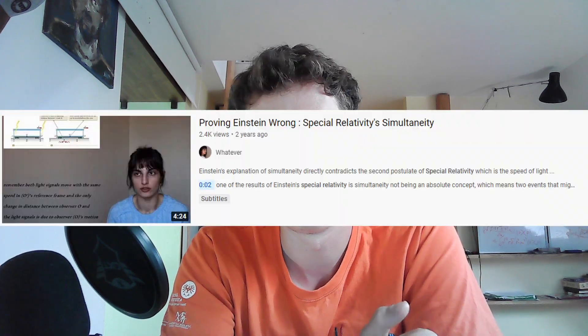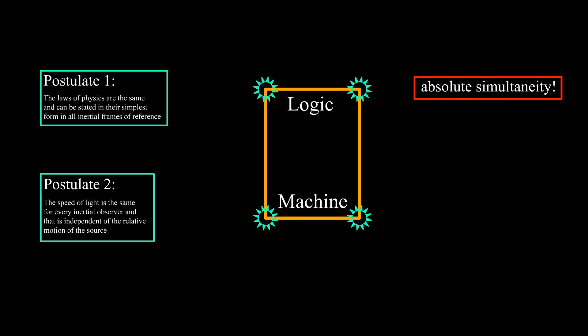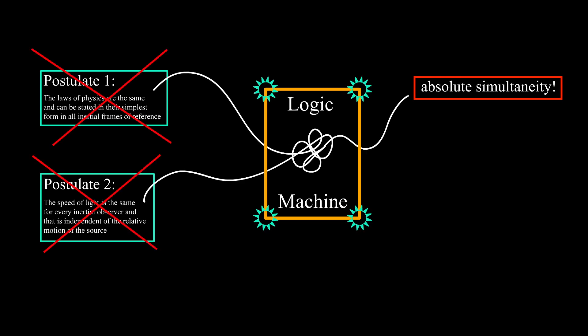For example, there is a video — linked in the description below — where absolute simultaneity was forced for both observers, producing a contradiction with the postulates, which is not a proper way to use logic. You might go watch it to see what you should not do when thinking about special relativity. By the way, have you ever heard of the so-called ladder paradox? This video might actually help you resolve that paradox, as relativity of simultaneity is the key. I'll keep that for another video, so stay tuned if you don't want to miss it.